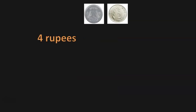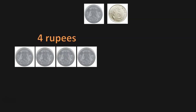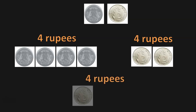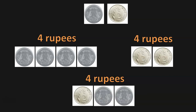Now let us try to make 4-Rupees using the same combination of a 2-Rupee coin and a 1-Rupee coin. Four 1-Rupee coins make 4-Rupees. Another possibility is two 2-Rupee coins, which also makes 4-Rupees. One more possibility is a 2-Rupee coin with two 1-Rupee coins, which also makes 4-Rupees.